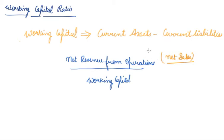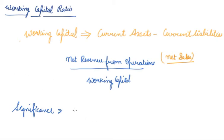Now, what is the significance of the working capital turnover ratio? It tells about the organization how efficiently the working capital has been used. More net sales means more efficiently you have utilized the working capital of the company. So higher the ratio, better is the utilization of the working capital.